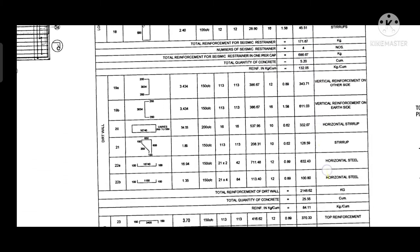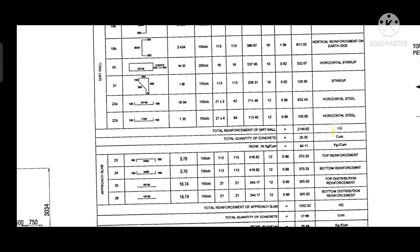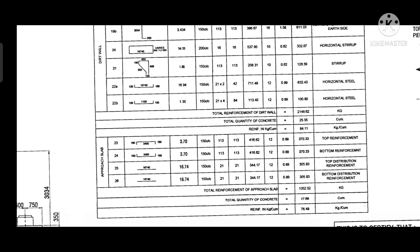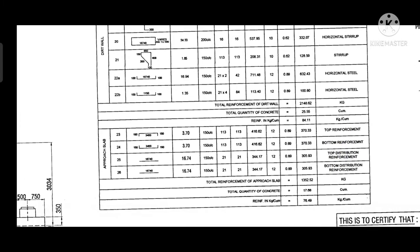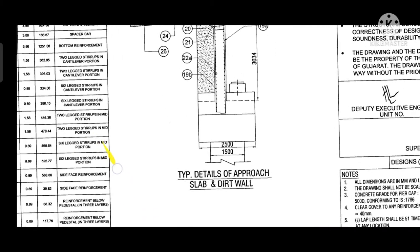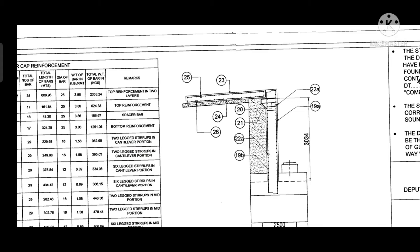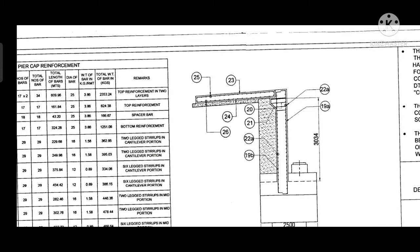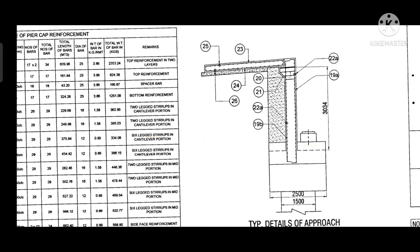Then we will see the schedule of the reinforcement of the approach slab, which has top reinforcement, bottom reinforcement, and distribution bars. This is the approach slab drawing — remarks 20, 25, and 23 are the reinforcement of the approach slab, and bottom reinforcement 24 and 26 is the distribution bar.